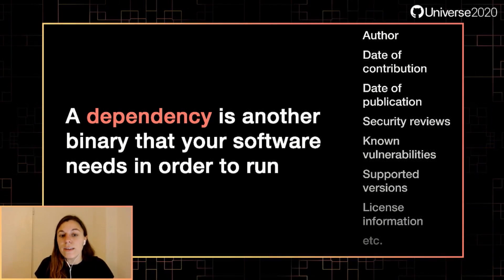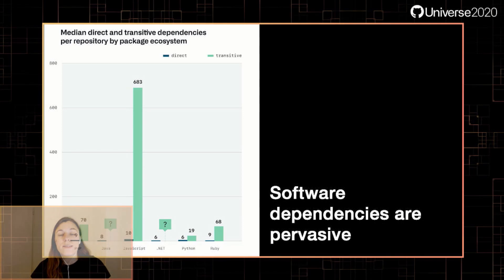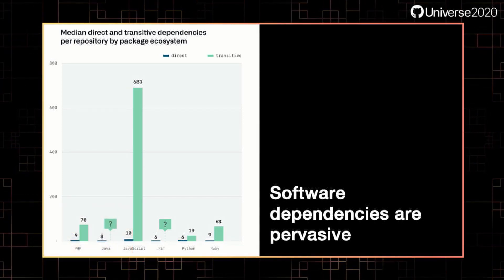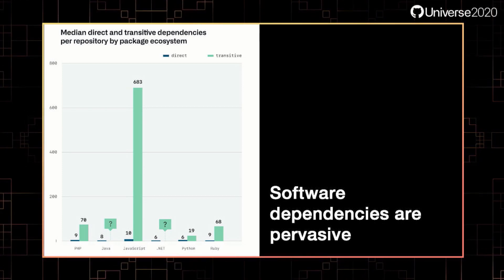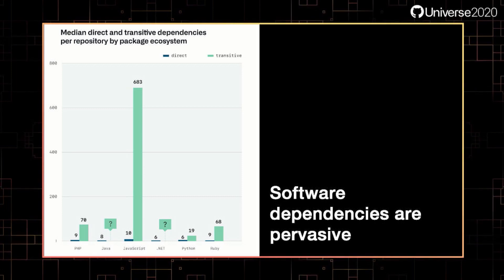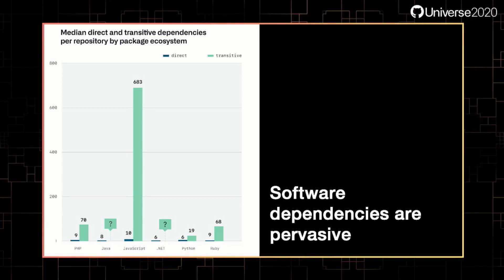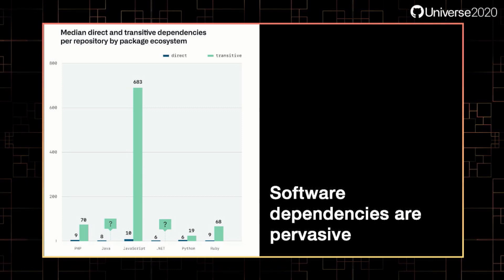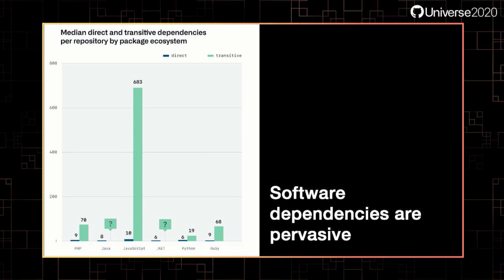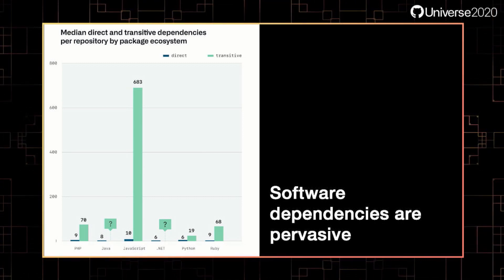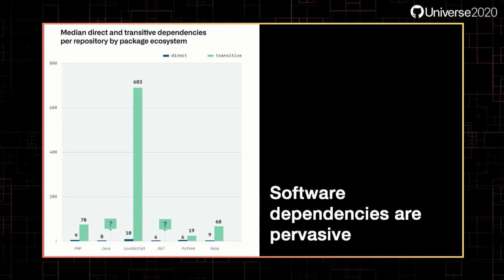But that's just a given dependency, and the reality is you probably have a lot of dependencies. Software dependencies are pervasive. It's normal for your project to use hundreds or even thousands of open source dependencies that a developer didn't write themselves. From the latest State of the Octoverse report, we know that anywhere from 65 to 94% of active repos rely on open source code. And although the median active repo might only have a handful of direct dependencies, it has many hidden indirect dependencies — with JavaScript being a clear winner with a median 683 transitive dependencies.